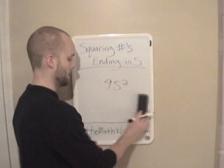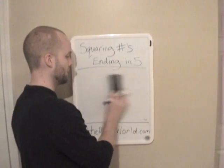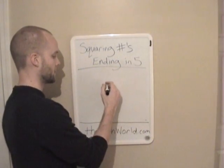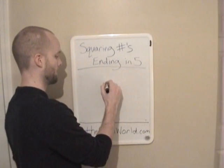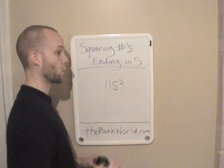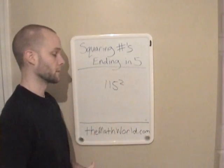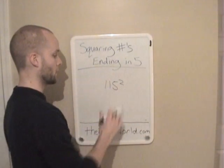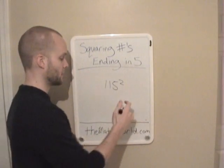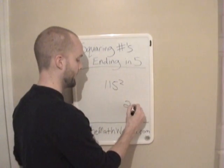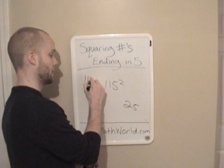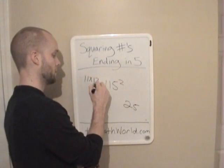It's that simple. And even if you see a larger number — let's say 115 squared — you can still do it with this trick. So 115 squared: any time you see this, you just write down 25. Now it's just 11 times 12.